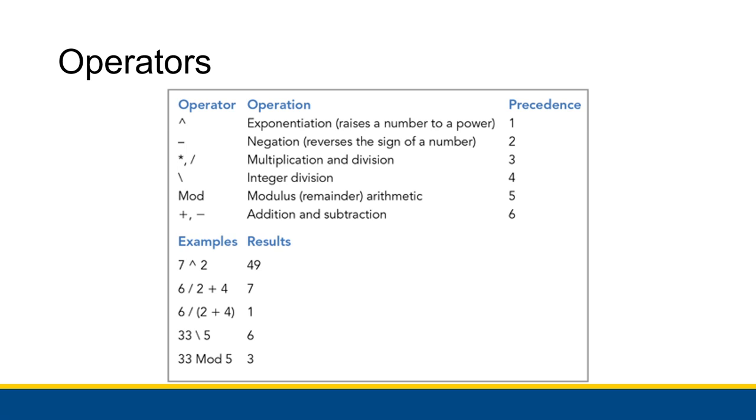You have multiplication and division. We use the star or asterisk sign for multiplication, which is above the 8 key on a standardized US American English QWERTY keyboard. Division will be a forward slash.